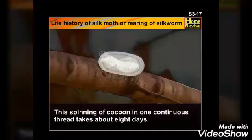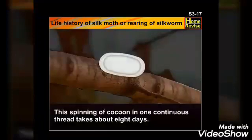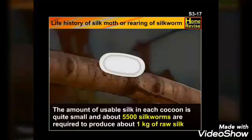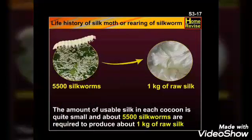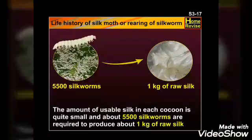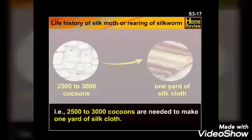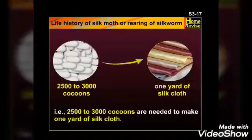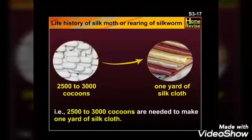The spinning of the cocoon in one continuous thread takes about eight days. The amount of usable silk in each cocoon is quite small — about 5,500 silkworms are required to produce one kilogram of raw silk. That means 2,500 to 3,000 cocoons are needed to make one yard of silk cloth. No wonder it is so expensive.